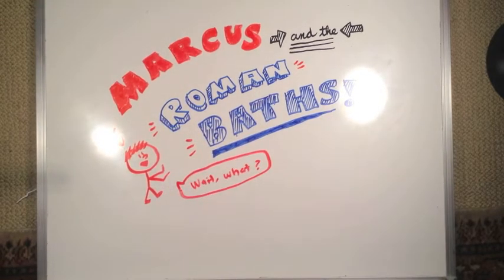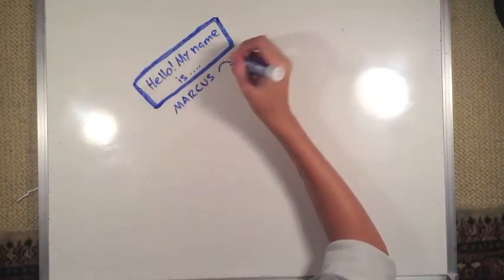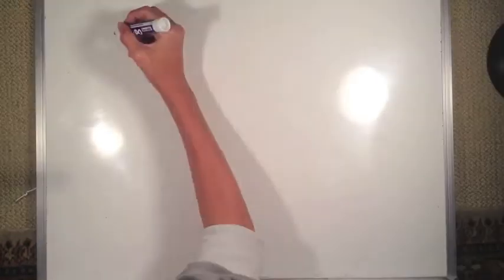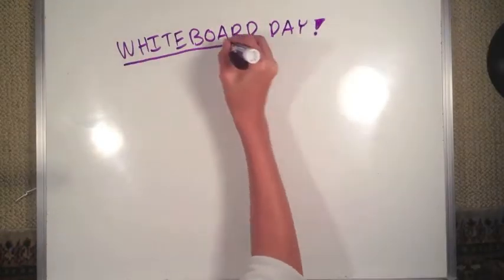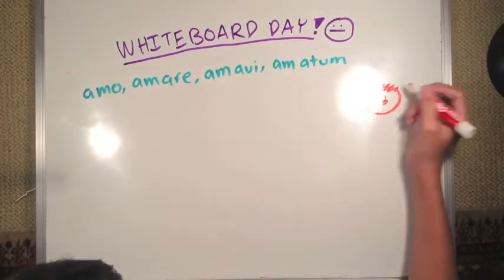So say you're this guy, his name is Marcus, and Marcus is in Latin class. It's whiteboard day for Marcus, and he's supposed to be conjugating the verbs on the white space in front of him.